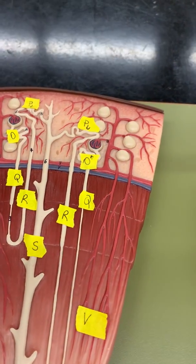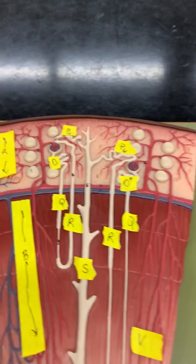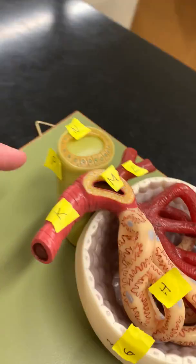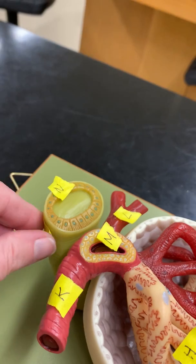S is the collecting duct. Alright, just for completeness, I put the distal convoluted tubule over here as well, because that's where these macula densa cells are. That's the distal convoluted tubule in this model.